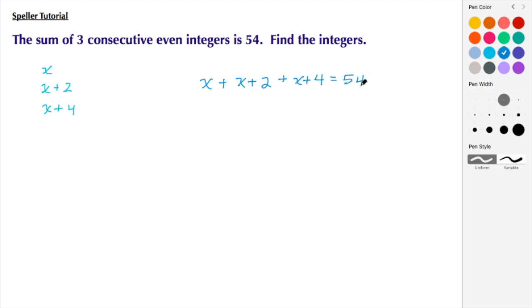Now we combine like terms. I have three X's, so that's going to be 3X. 2 plus 4 gives me 6, and then that is equal to 54. At this point I need to subtract 6 from both sides, so I'm left with 3X is equal to 54 minus 6, which is 48.